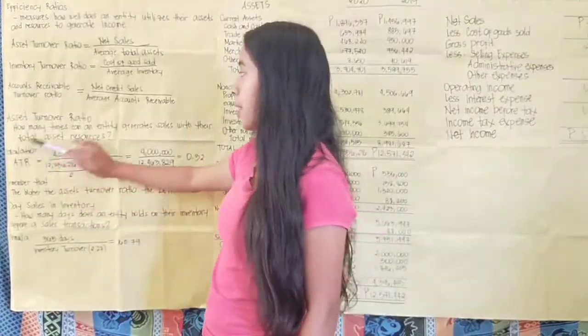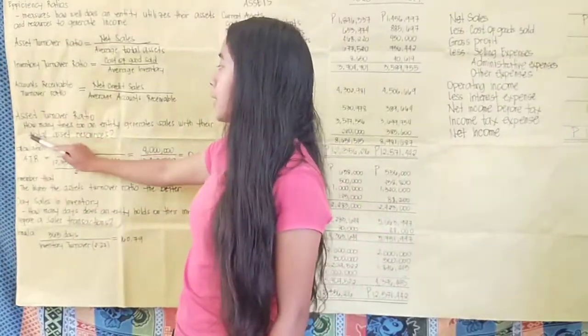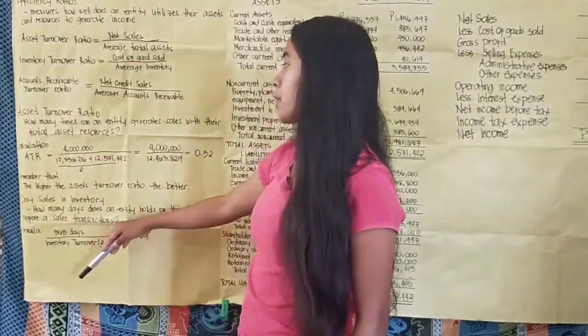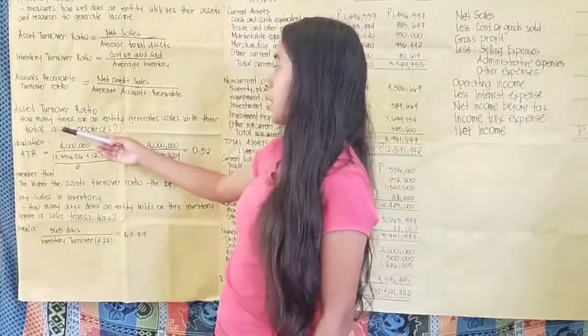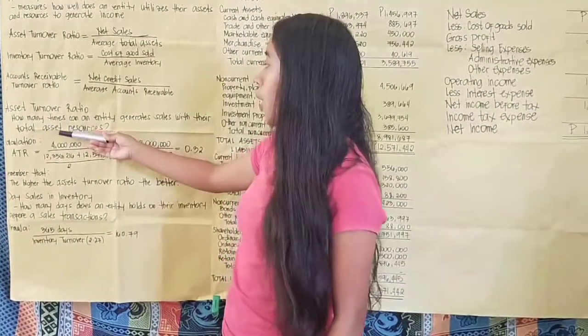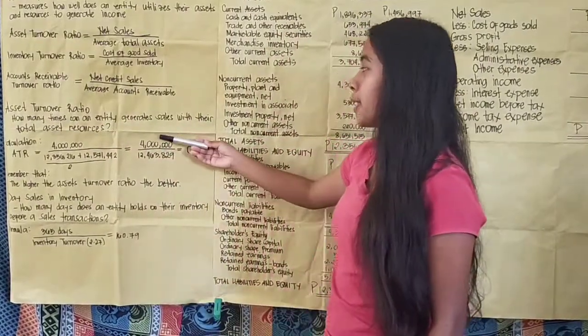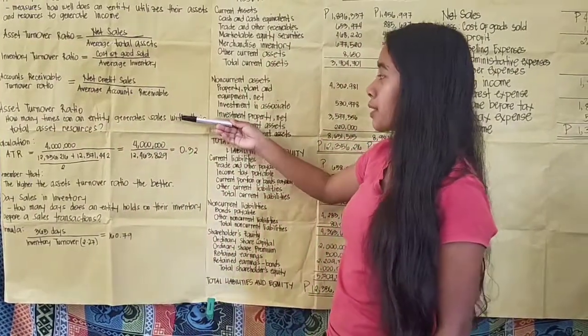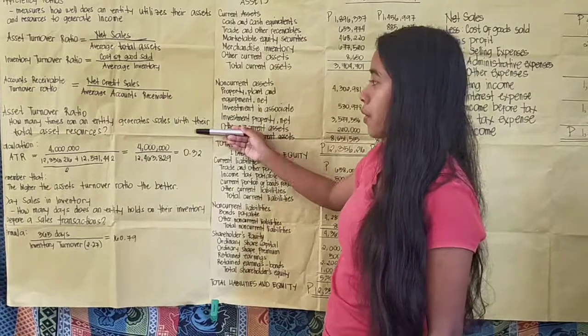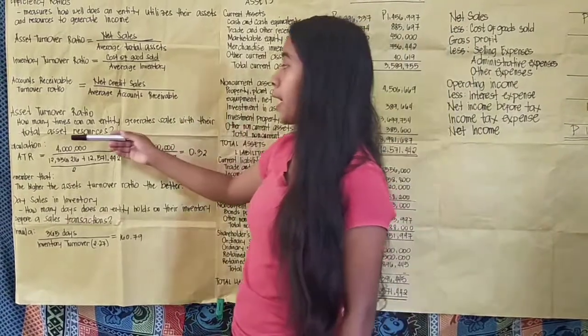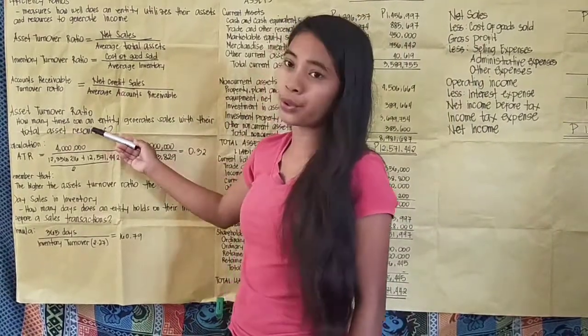Asset turnover ratio answers the question: how many times can an entity generate sales with their total asset resources?